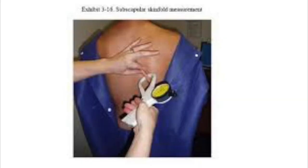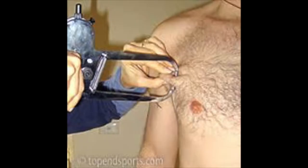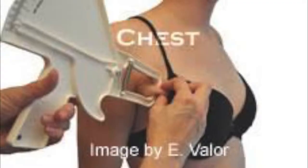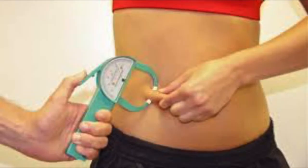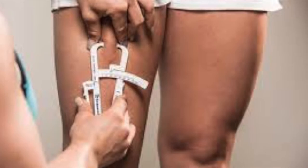The triceps are measured with a vertical fold; subscapular measured with a diagonal fold; suprailiac measured with a diagonal fold; chest or pectoral, which varies between men and women as shown in the images, measured with a diagonal fold; abdominal measured with a vertical fold; midaxillary measured with a vertical fold; and the thigh is also measured with a vertical fold.